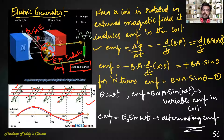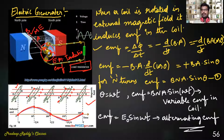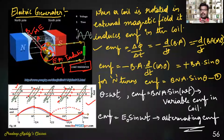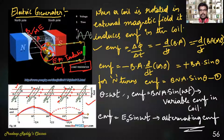By placing a commutator, the direction of EMF which is in the negative cycle can be reversed. The AC generator can thus be converted into DC by using a commutator.